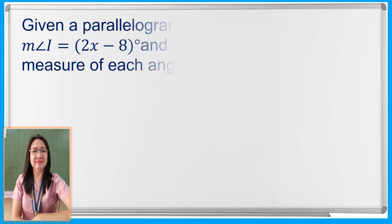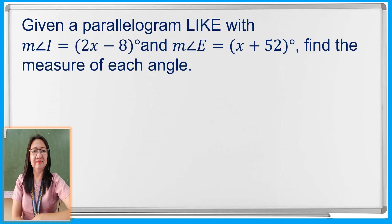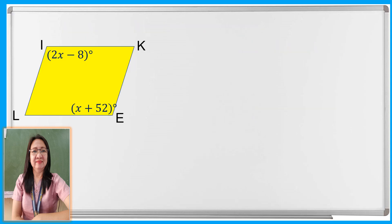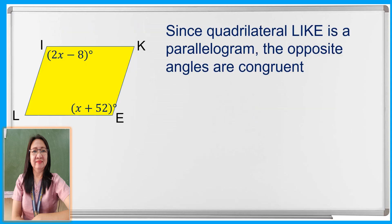Let us have another problem. Given parallelogram L-I-K-E, the measure of angle I is 2x minus 8 degrees, and the measure of angle E is x plus 52 degrees. Find the measure of each angle. Since quadrilateral L-I-K-E is a parallelogram, the opposite angles are congruent. Therefore, the measure of angle I is equal to the measure of angle E.